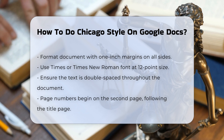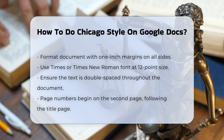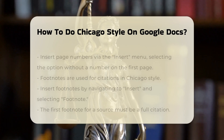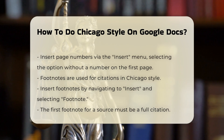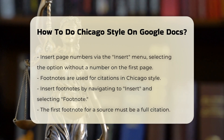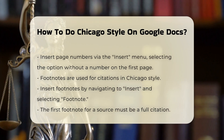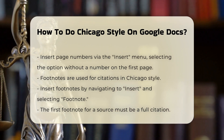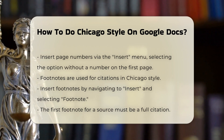Page Numbers. In Chicago Style, page numbers start on the second page, after the title page. To insert page numbers, go to the Insert menu, select Page Number, and choose the option that has no number on the first page. This will start numbering the first page of text with the number 1.